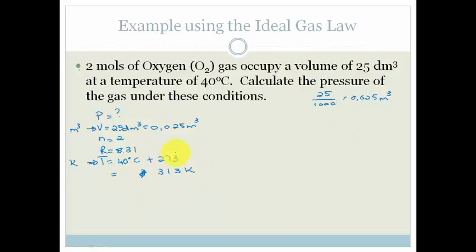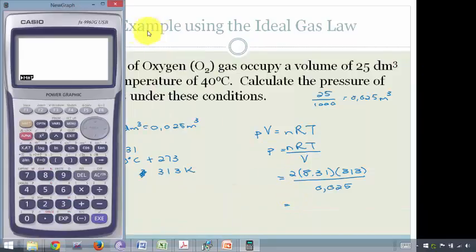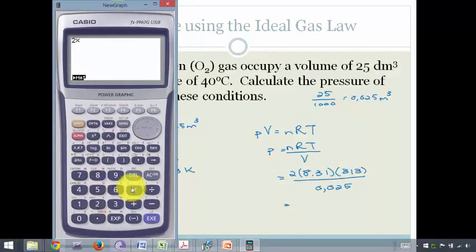Now, all we have to do is substitute these into our ideal gas law, which is pV = nRT. We want P, so we're solving for P, so we're going to leave P by itself, and we're going to go P = nRT over the volume. The number of moles is 2, the universal gas constant is 8.31, the temperature is 313, and we know that the volume is going to be 0.025. And now what do we do? We get out our calculators. We've got 2 times 8.31 times 313 equals 5202.06, divided by 0.025.